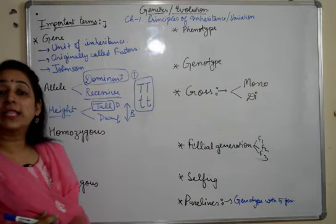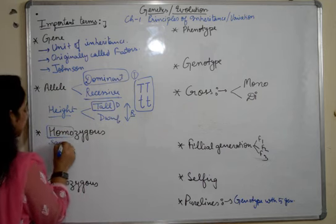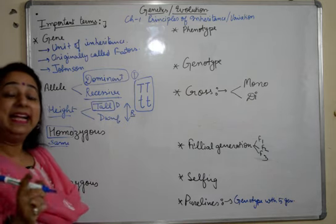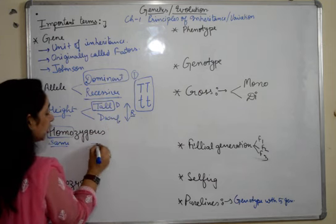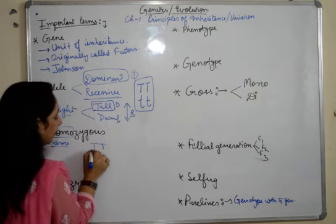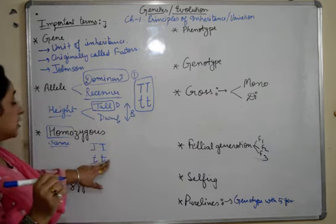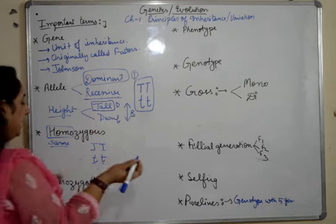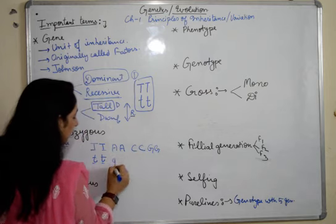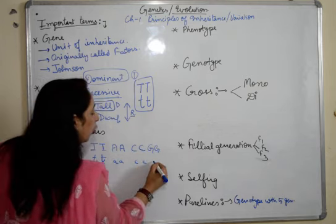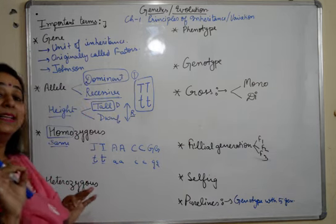Next is homozygous condition. 'Homo' means same. When we express or write the alleles, this is a homozygous state wherein both the alphabets are similar — it can be AA, CC, or GG. Where both alleles are written with a similar alphabet, that is a homozygous condition.